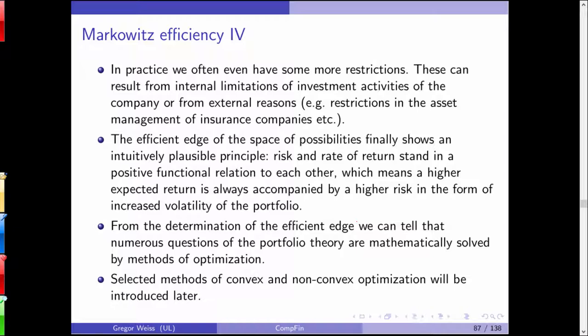The efficient frontier illustrates an intuitively plausible principle: risk and return are in a positive functional relationship — higher expected return always comes with higher risk. Starting from the theoretical efficient frontier, adding constraints cuts down the feasible space, potentially leaving only a restricted portion of portfolios to consider.